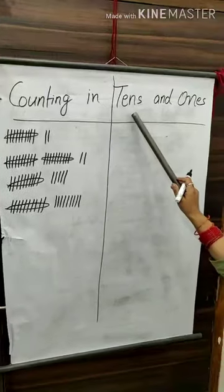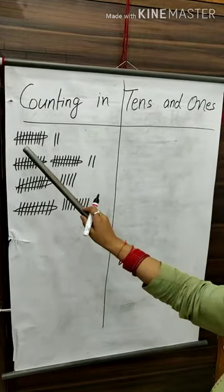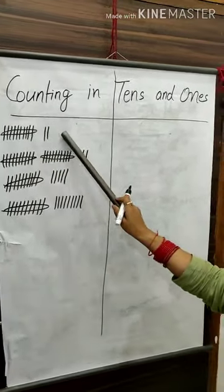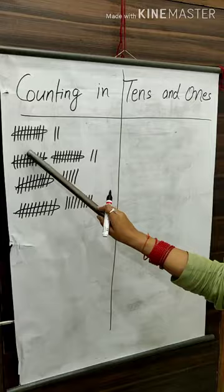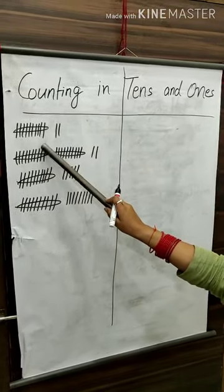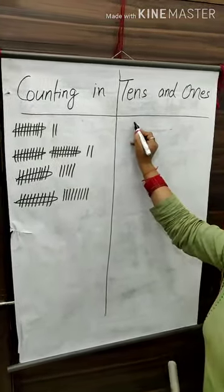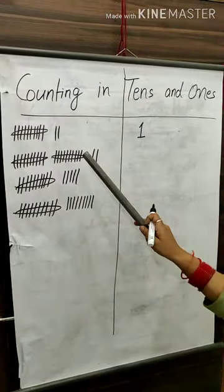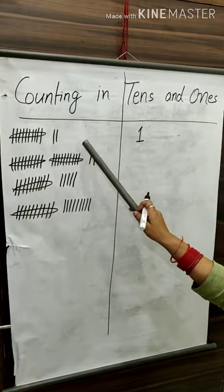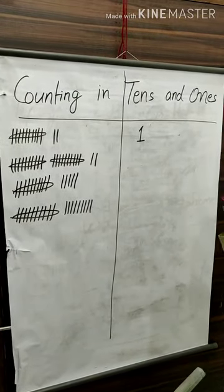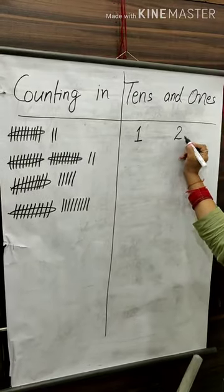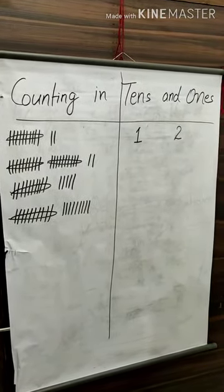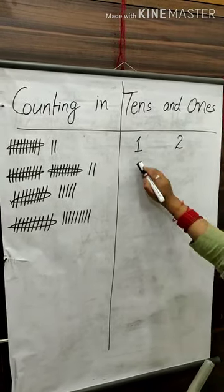Counting in tens and ones. I have ten bundles of sticks and two loose bundles. We have one bundle of ten sticks. So I have one ten. We have two loose sticks, so I have two ones. We have number twelve.